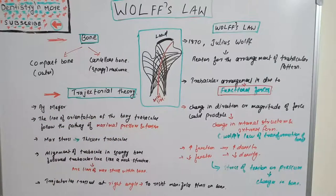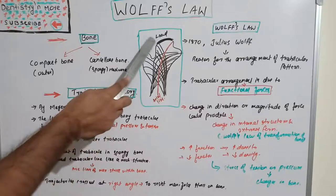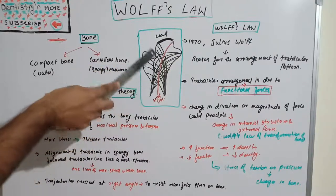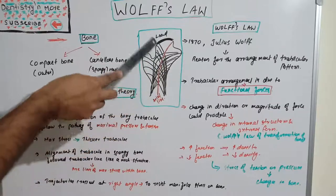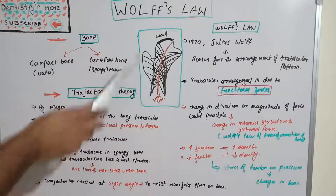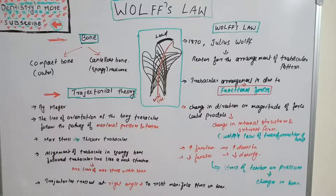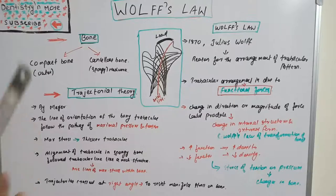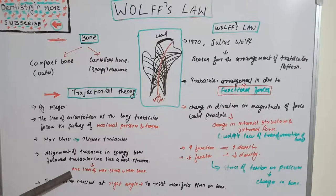Trajectorial theory says the line of orientation of the bony trabeculae follows the pathway of maximal pressure and tension — where the maximal pressure and tension occur because of the load. When there is maximum stress, there will be thicker trabeculae. Thicker trabeculae are found in areas of maximal stress. The alignment of trabeculae in spongy bone follows the trabecular line like a mechanical structure, going with maximal pressure and tension.